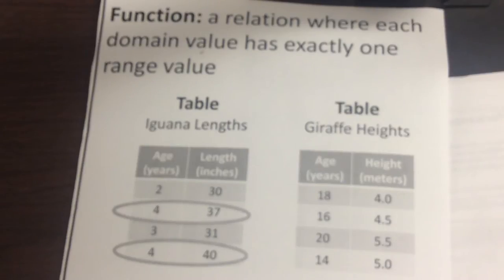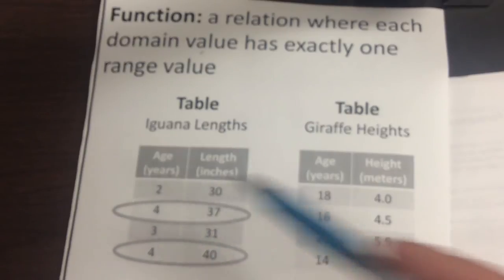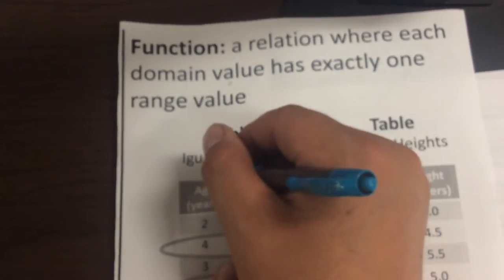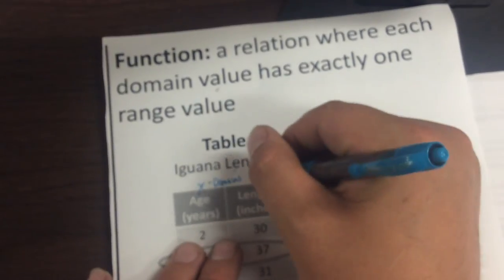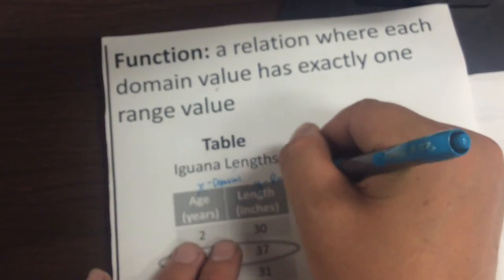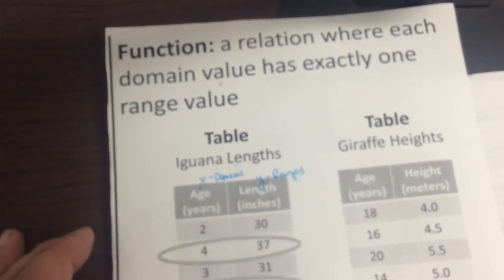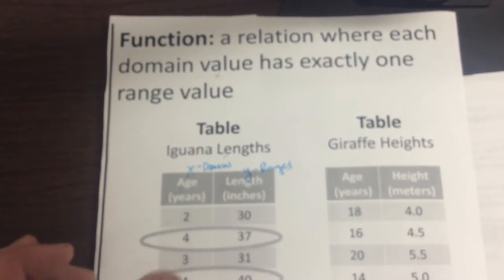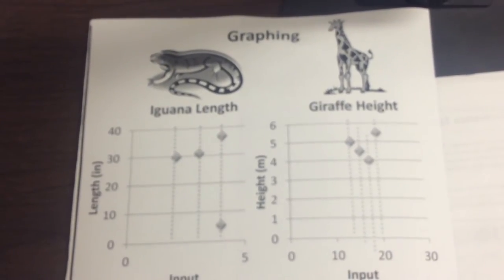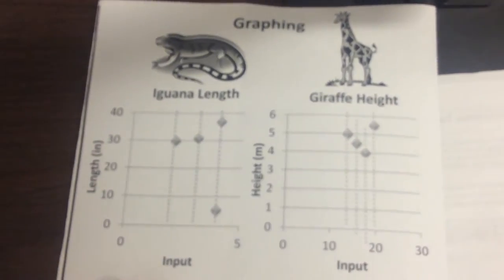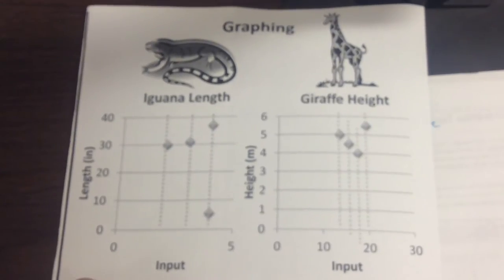Going back to our iguana and giraffe lengths and heights. Again, we know which ones are functions or not functions. We can take this data and imagine the inputs as the x's or the domains. And these are the y's or the ranges. We can take these ideas and we can graph them. Those graphs would look like this. Right now, I want you guys to go ahead and copy these graphs into your book. This should take you a little bit of time. So go ahead and pause the video and copy these over.